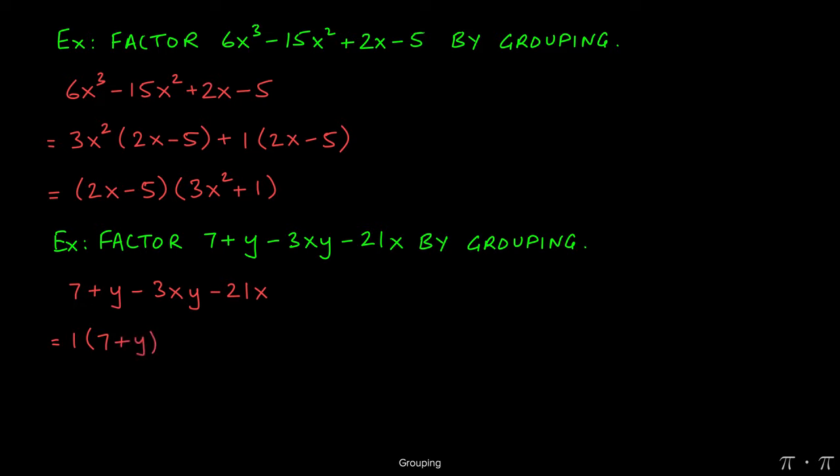For the last two terms, we can factor out a 3x. Now we want to start getting better at knowing which factors would give us the binomials to match. If we had factored out a positive 3x, looking ahead, we would have gotten a negative y. But we need a positive y.